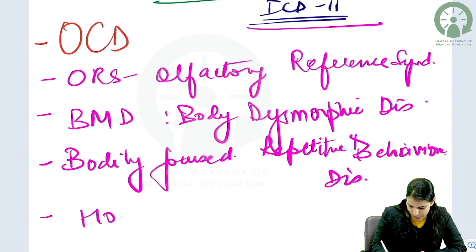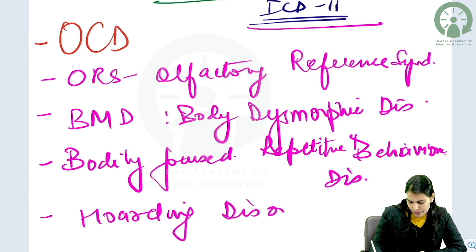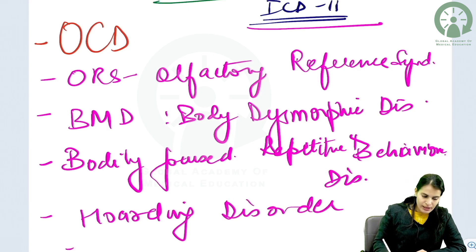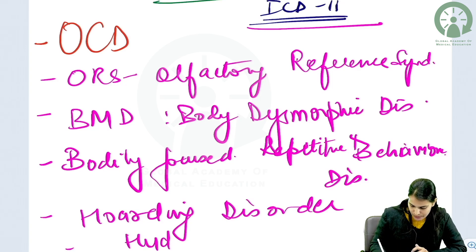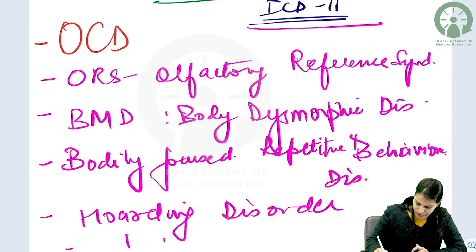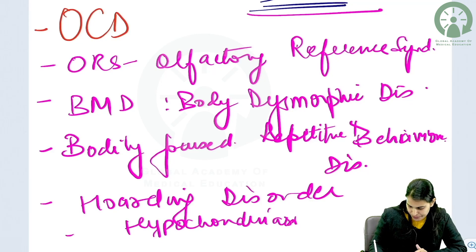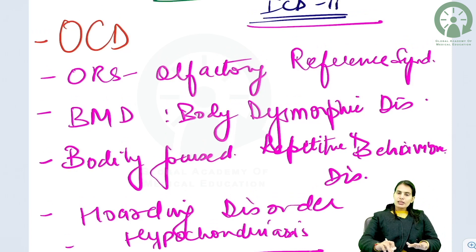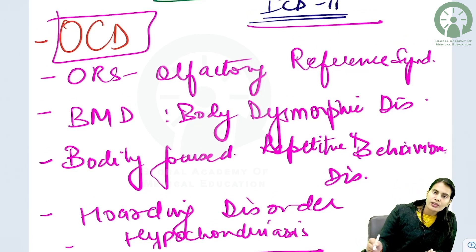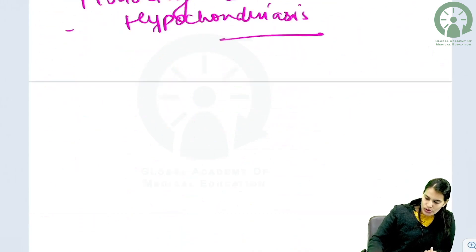Apart from that, you have Hoarding Disorder. Hypochondriasis has also been included in this spectrum. Before discussing all of these, we will first try to understand what OCD is.